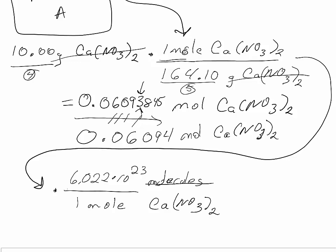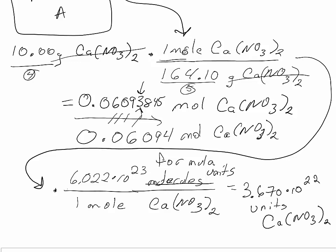And I would multiply by Avogadro's number of molecules per one mole of calcium nitrate. Or in this case, because of the kind of compound it is, I would call it formula units. So the answer here would take all of that work from the line before, and we would instead now have, keeping four significant figures, 3.670 times 10 to the 22nd units of calcium nitrate. These would be formula units because this is an ionic compound.